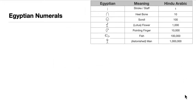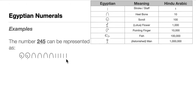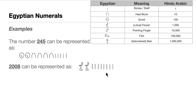Let's look at some examples. The number 245 in Egyptian numerals is written as: two scrolls (100 + 100 = 200), four heel bones (40), and five strokes (5) — giving 245. The number 2,008 is written as two lotus flowers (2,000) and eight strokes (8).